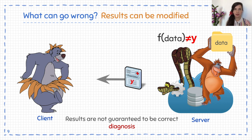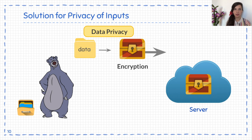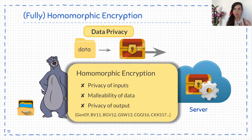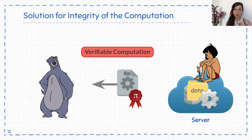A solution to protect data privacy would be to use encryption. We have encryption schemes that allow the server to perform computation on the ciphertext and obtain encrypted results. A long line of work was dedicated to constructing more efficient such schemes, and here are some results in the area of fully homomorphic encryption. For the second problem of Baloo — the integrity of the results of the computation — he can use verifiable computation.